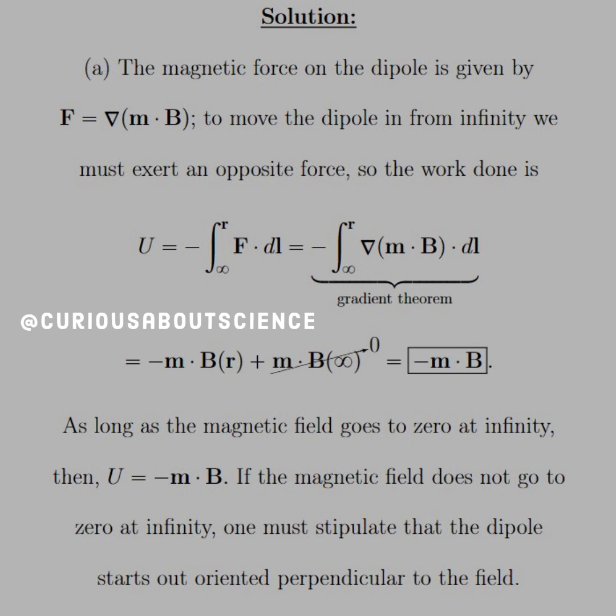All right, so for our solution, let's start with the magnetic force on the dipole which is given by del operating on M dot B. To move the dipole in from infinity, we must exert an opposite force so the work done is the line integral F by DL. And thus by the gradient theorem when we plug in what F is, we can evaluate it at the endpoints.